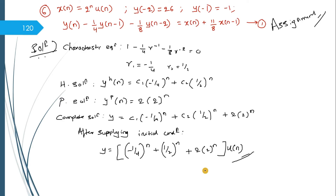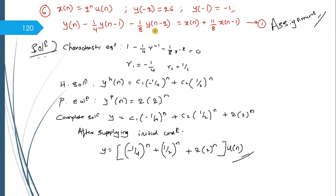I had given an assignment for you to solve by yourself. Here I am writing the solutions just to cross-check. The characteristic equation is written as 1 minus 1/4 R^(-1) minus 1/8 R^(-2). Multiply by R-squared throughout to get a quadratic equation. Finding the roots gives minus 1/4 and 1/2. Using the table, you get the homogeneous solution form, and a particular solution gives the constant as 2, so the homogeneous solution is 2 times 2^n.